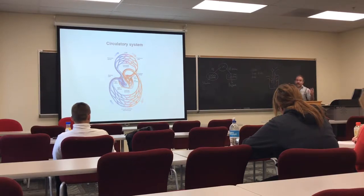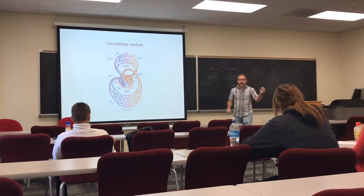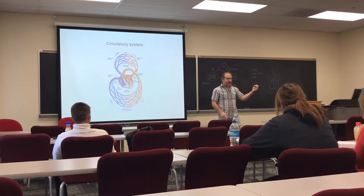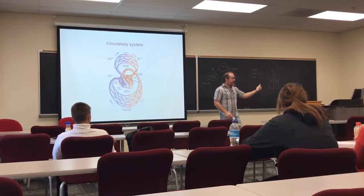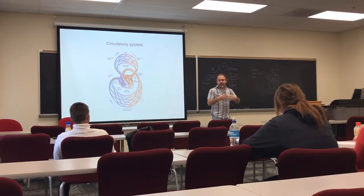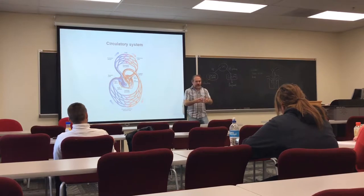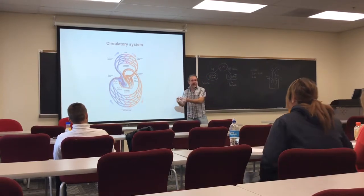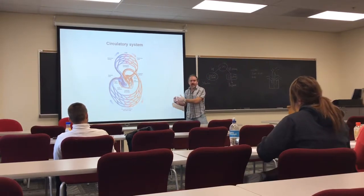There are three kinds of blood vessels: veins, arteries, and capillaries. We have big arteries, small arteries, capillaries, small veins, and big veins. What's the difference between arteries and veins? A common mistake is to say veins carry deoxygenated blood and arteries carry oxygenated blood — that is wrong. You cannot differentiate arteries and veins using that criteria.